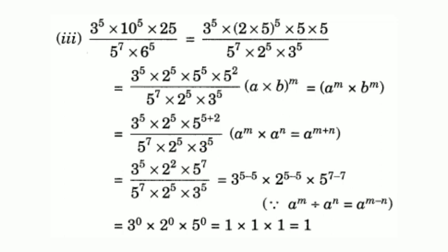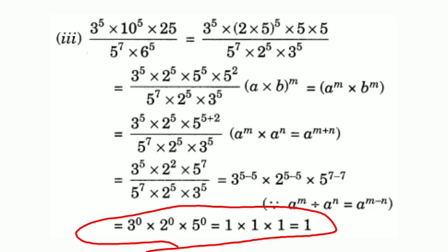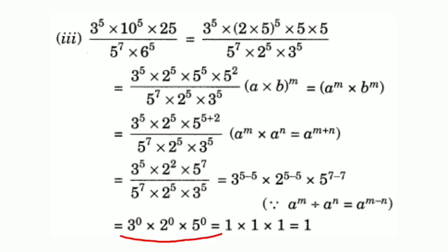We now have numerator: 3 raised to 5 into 2 raised to 5 into 5 raised to 7, and denominator: 5 raised to 7 into 2 raised to 5 into 3 raised to 5. Applying division laws: 3 raised to 5 minus 5 equals 3 raised to 0, 2 raised to 5 minus 5 equals 2 raised to 0, and 5 raised to 7 minus 7 equals 5 raised to 0. Since any number raised to 0 equals 1, we get 1 into 1 into 1. The final answer is 1.